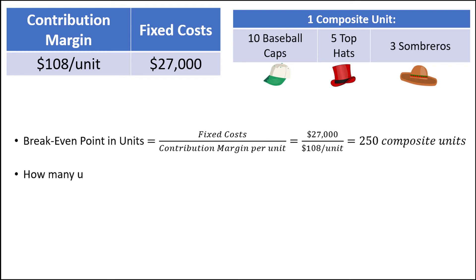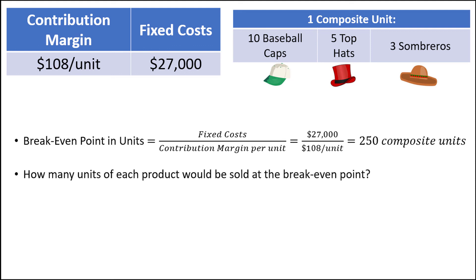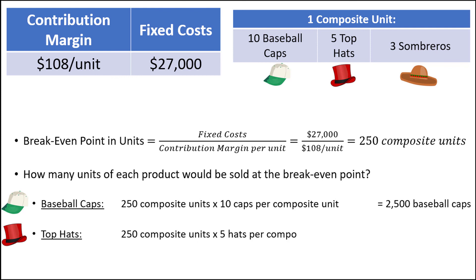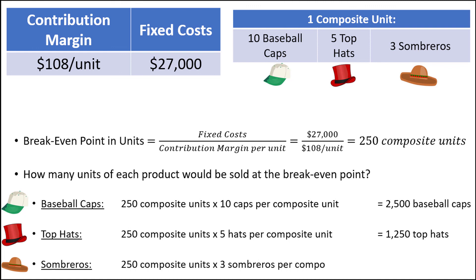So the natural question becomes: how many units of each of our three hats would be sold at the breakeven point? We know that one composite unit includes 10 baseball caps, 5 top hats, and 3 sombreros, so all we have to do is multiply 250 composite units by each of those quantities. For baseball caps, that's 250 times 10, which equals 2,500. For top hats, 250 times 5 equals 1,250. For sombreros, 250 times 3 equals 750 sombreros sold at the breakeven point.